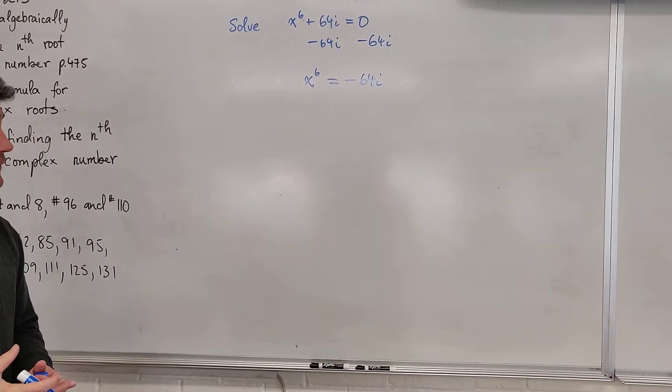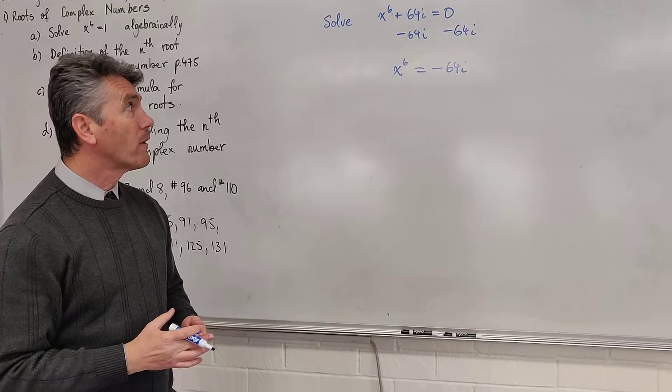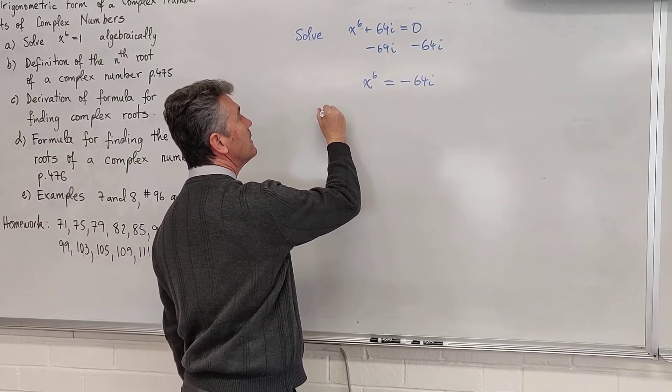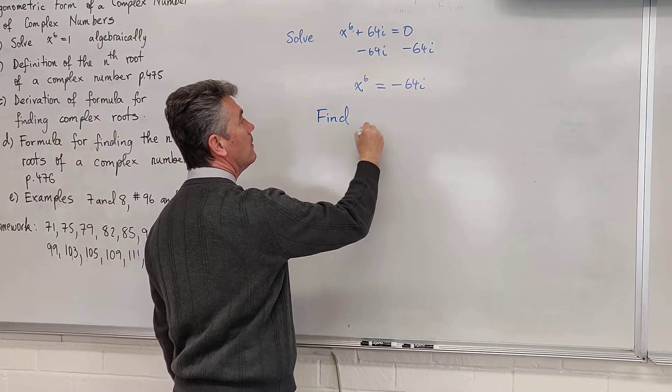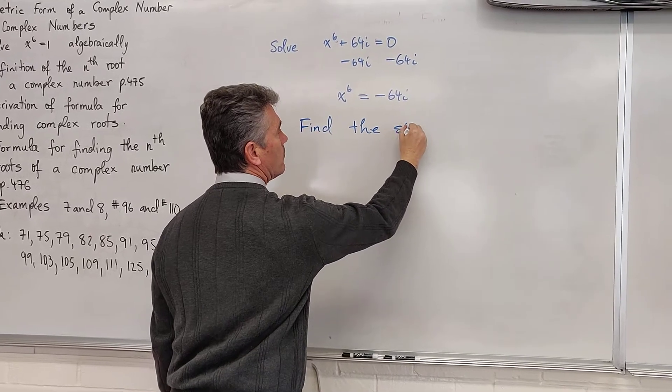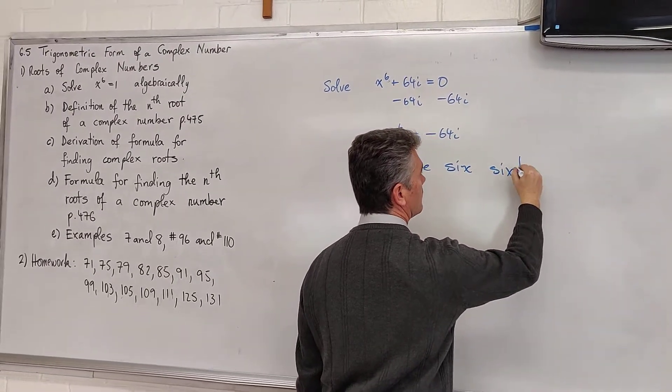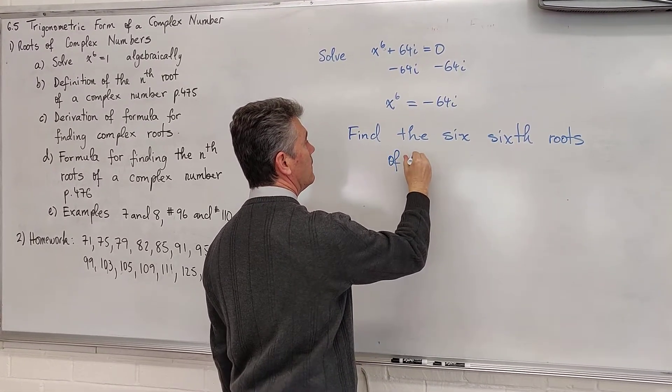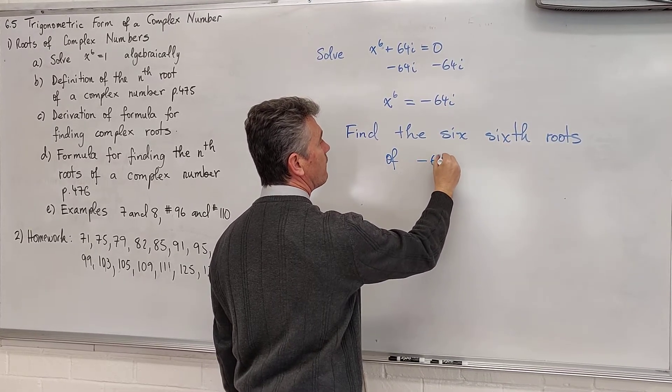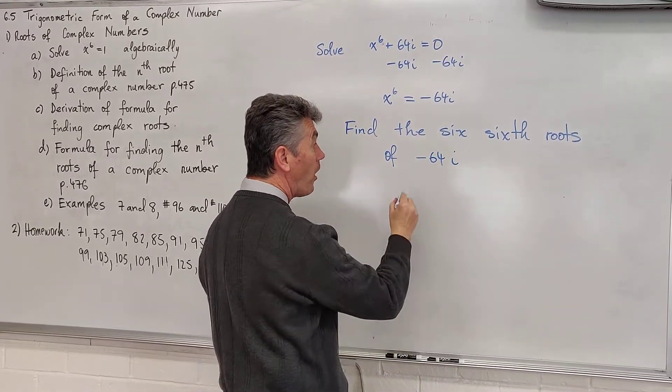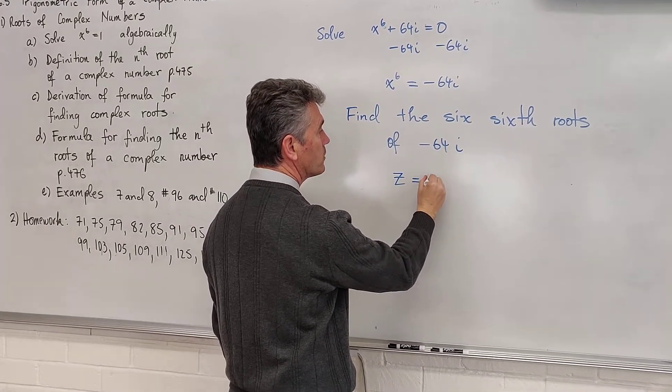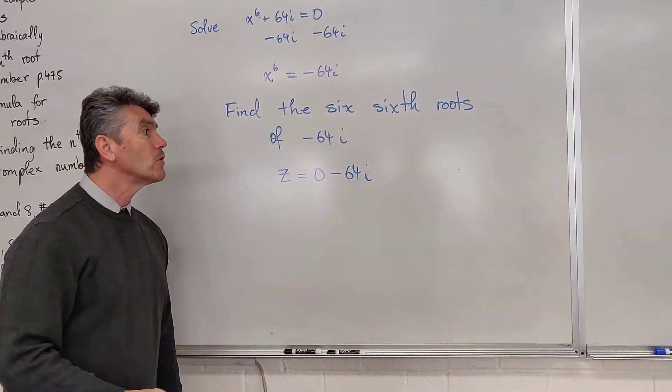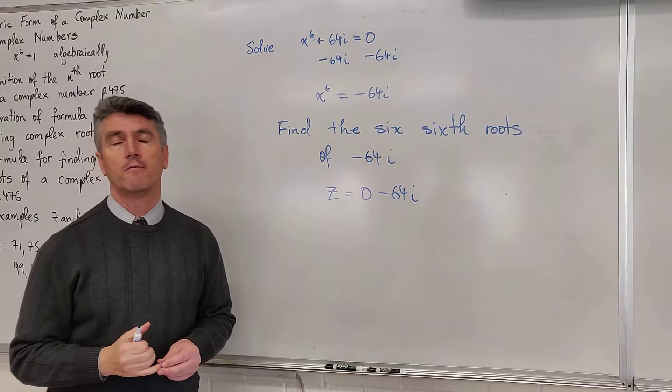What do we do after this? We translate into a problem like we've done before. So what is this question asking me to do? The question is asking me to find the 6 roots of negative 64i. In other words, our complex number z equals 0 minus 64i. Now we start looking for values for our formula.